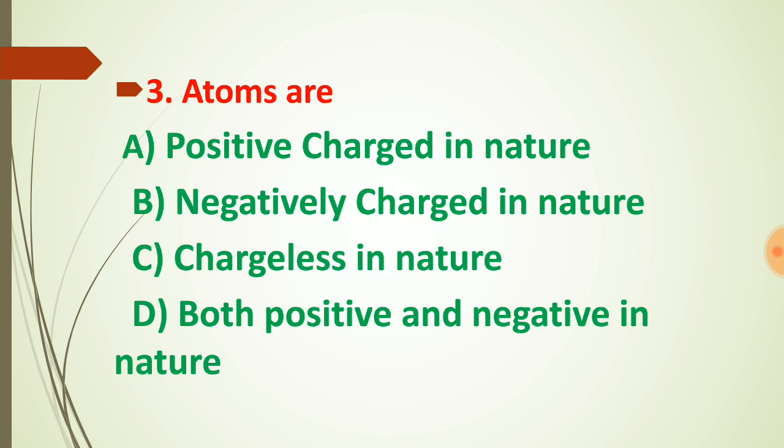Question number three: atoms contain positively charged protons and negatively charged electrons, plus chargeless neutrons. Since atoms contain protons and electrons in equal numbers, atoms are always neutral — always chargeless. So option choice C is the correct answer.